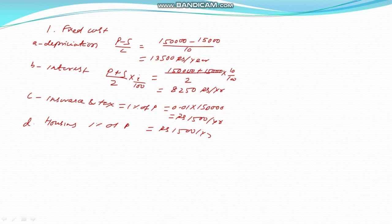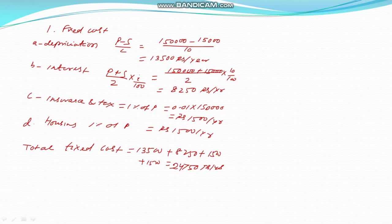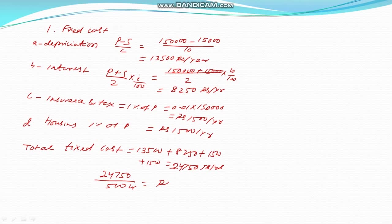Therefore, total fixed cost equals 13,500 plus 8,250 plus 1,500 plus 1,500, which equals 24,750 rupees per year. Converting to rupees per hour: 24,750 divided by 500 hours equals 49.5 rupees per hour. This is the total fixed cost.